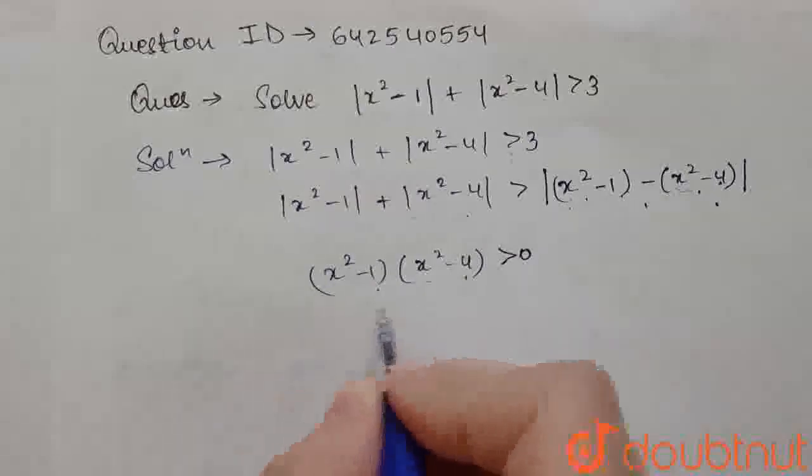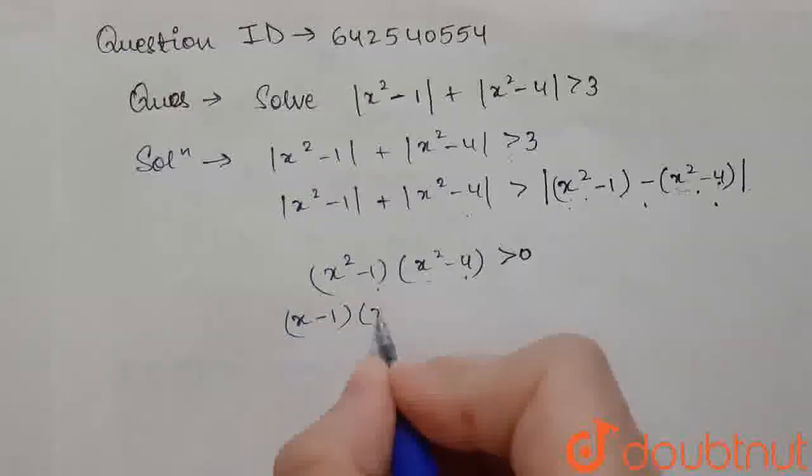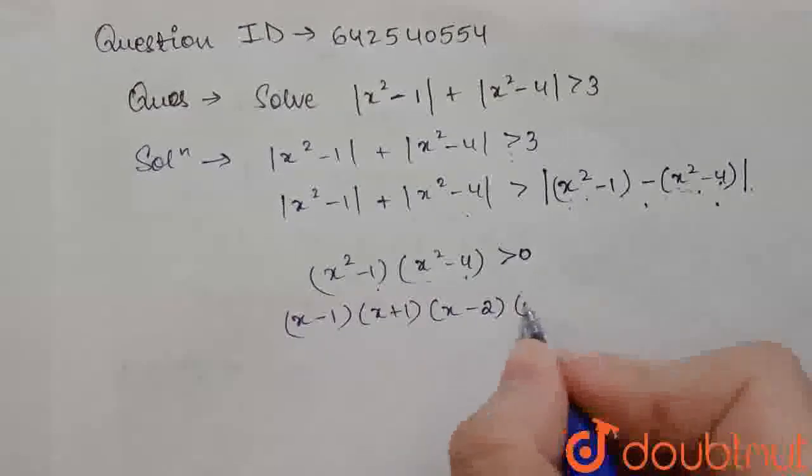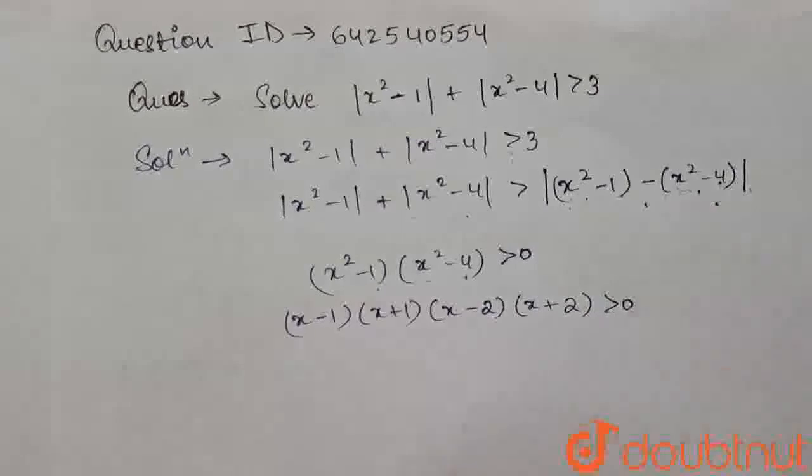From here we can conclude that x square minus 1 multiplied by x square minus 4 must be greater than 0. So from solving this, we will get (x-1)(x+1)(x-2)(x+2) greater than 0.